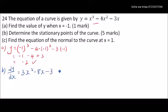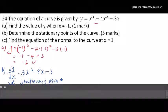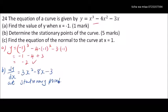When differentiating, multiply the power then subtract one from the power: 3x², then -8x, then -3. At a stationary point, dy/dx = 0, so 3x² - 8x - 3 = 0.